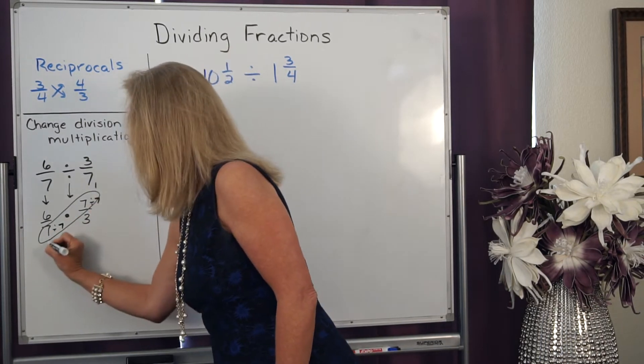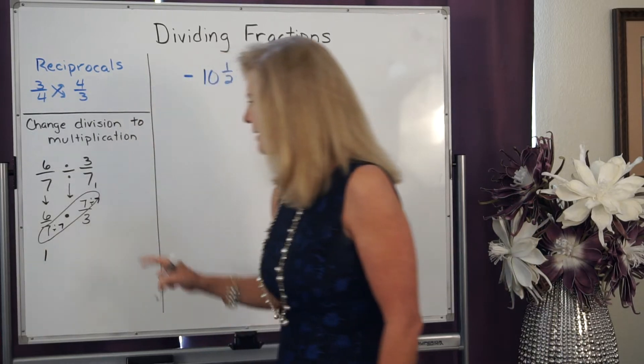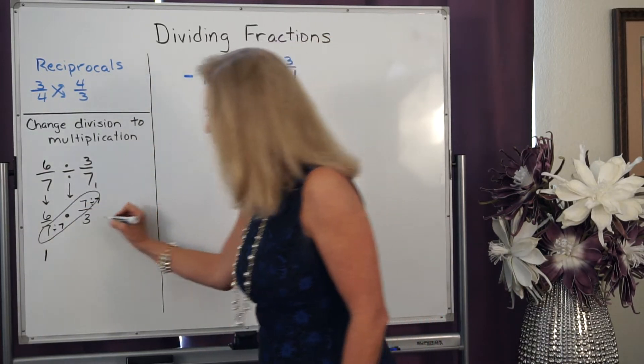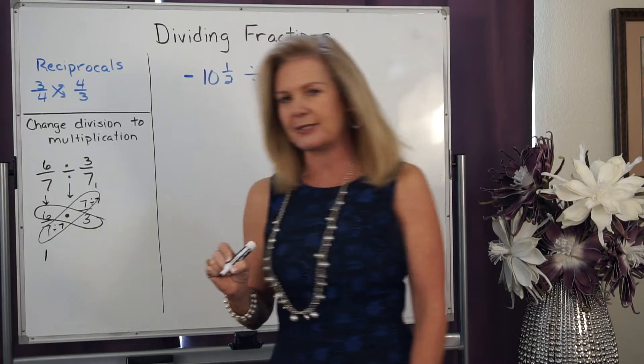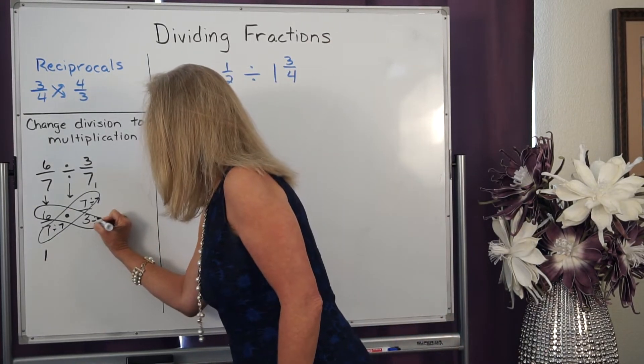7 divided by 7 is 1. 7 divided by 7 is 1. Now I look on this diagonal, and I also know I could reduce it because I could divide by 3.